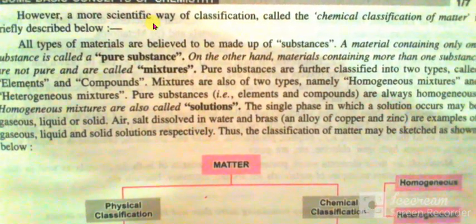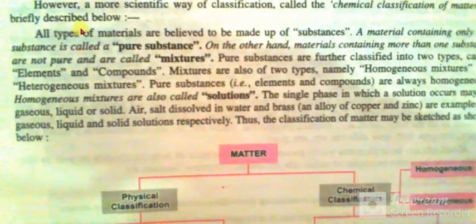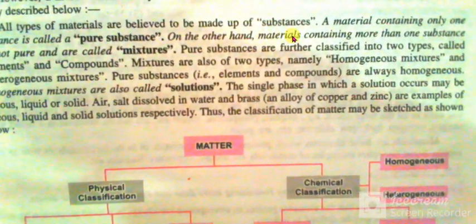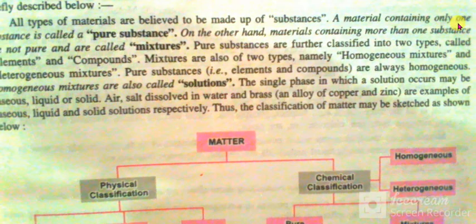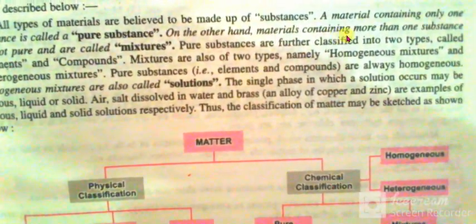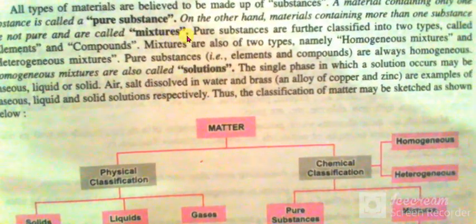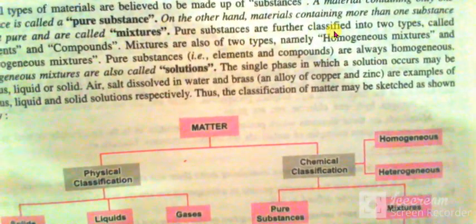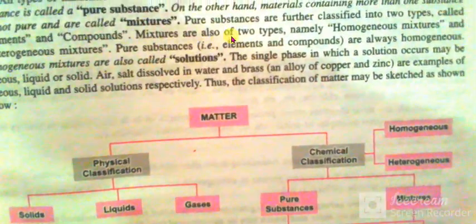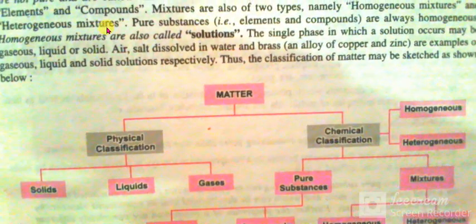However, a more scientific way of classification, called the chemical classification of matter, is briefly described below. All types of materials are believed to be made up of substances. A material containing only one substance is called a pure substance. On the other hand, materials containing more than one substance are not pure and are called mixtures. Pure substances are further classified into two types called elements and compounds. Mixtures are also of two types: homogeneous mixtures and heterogeneous mixtures.